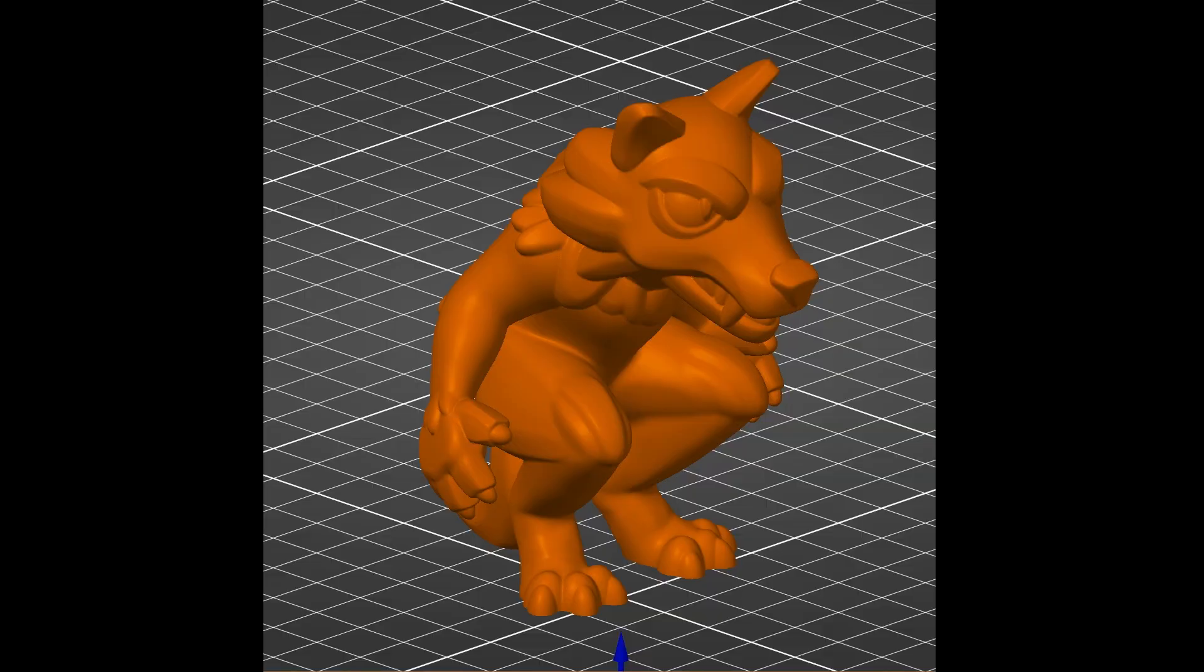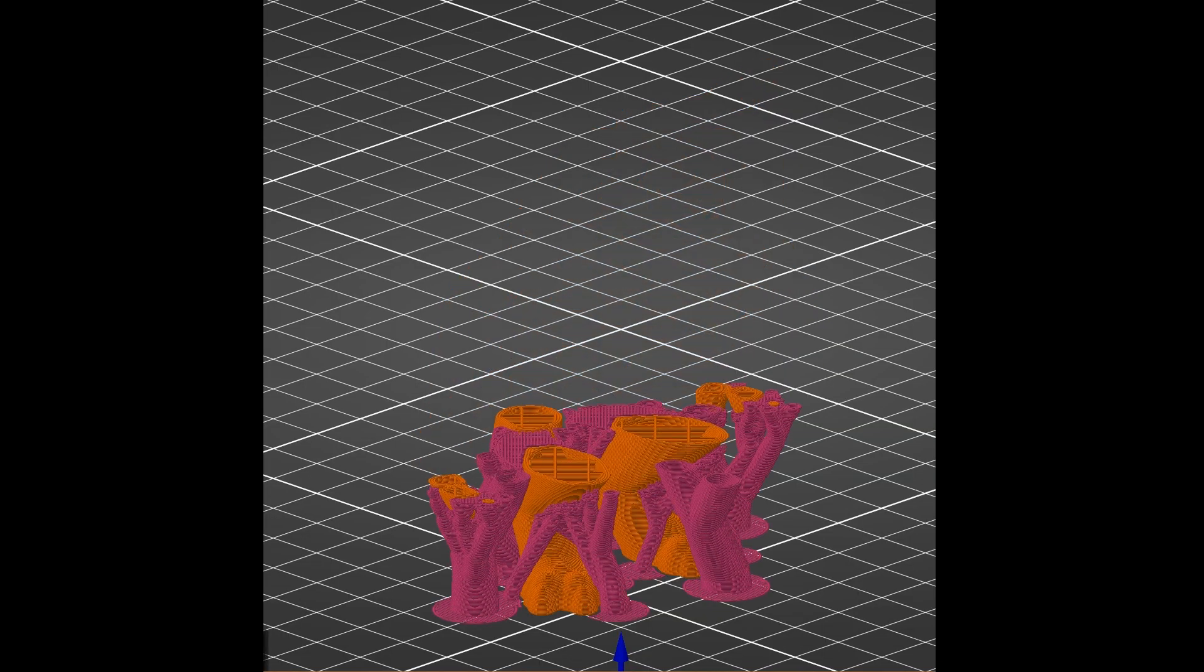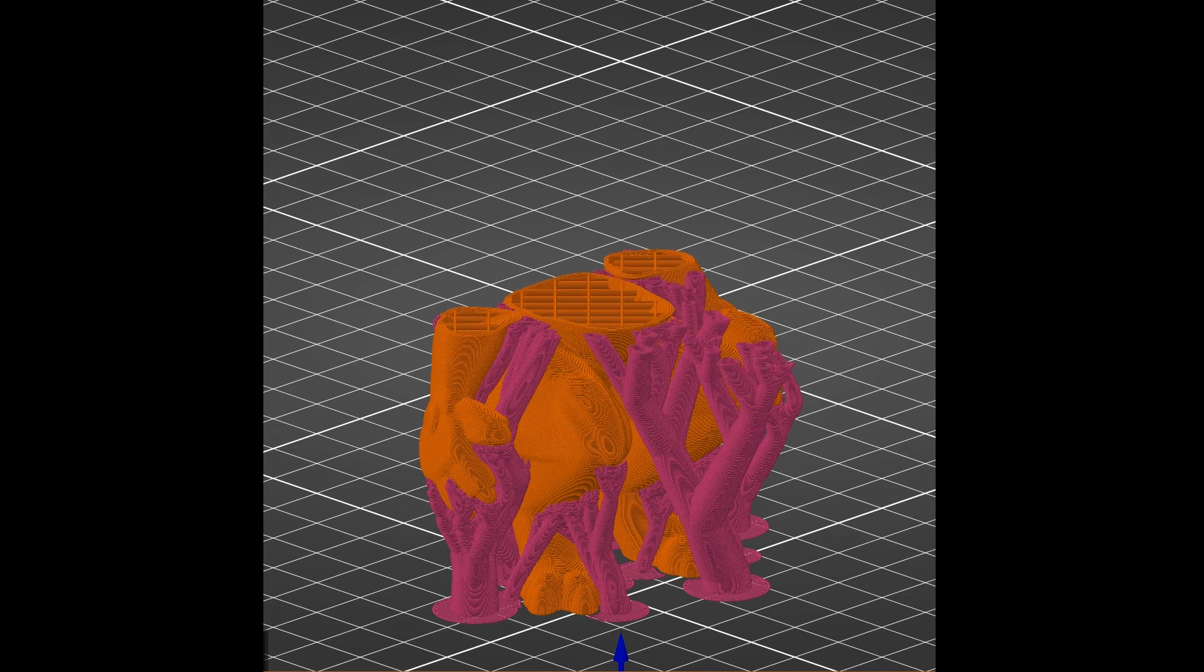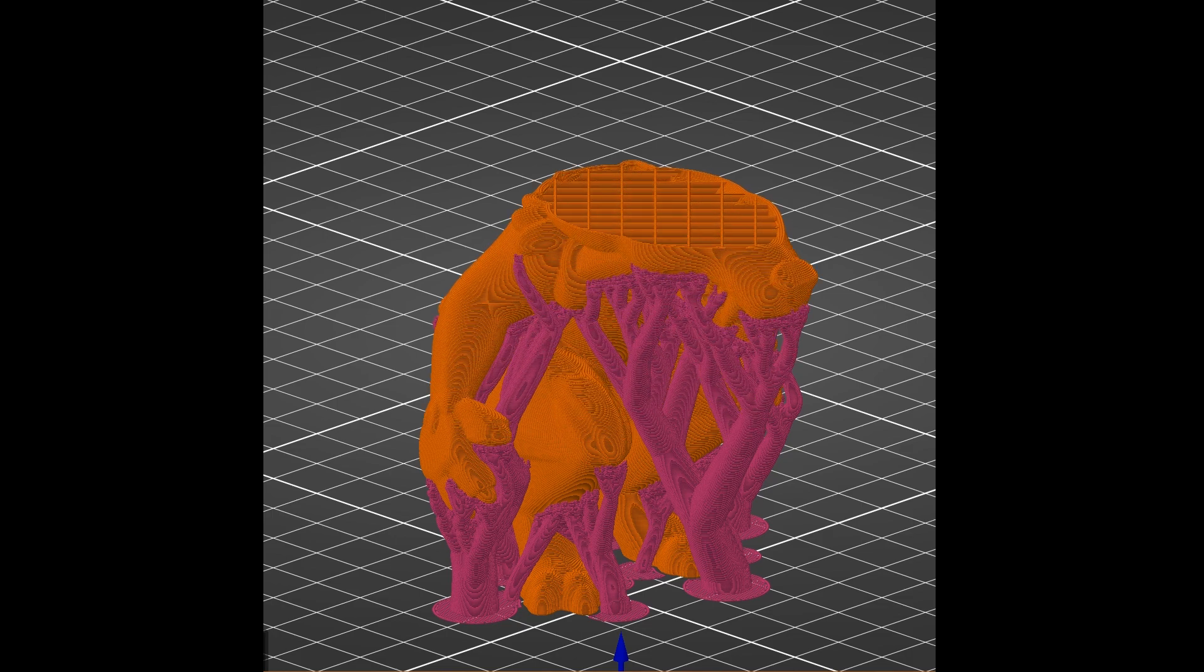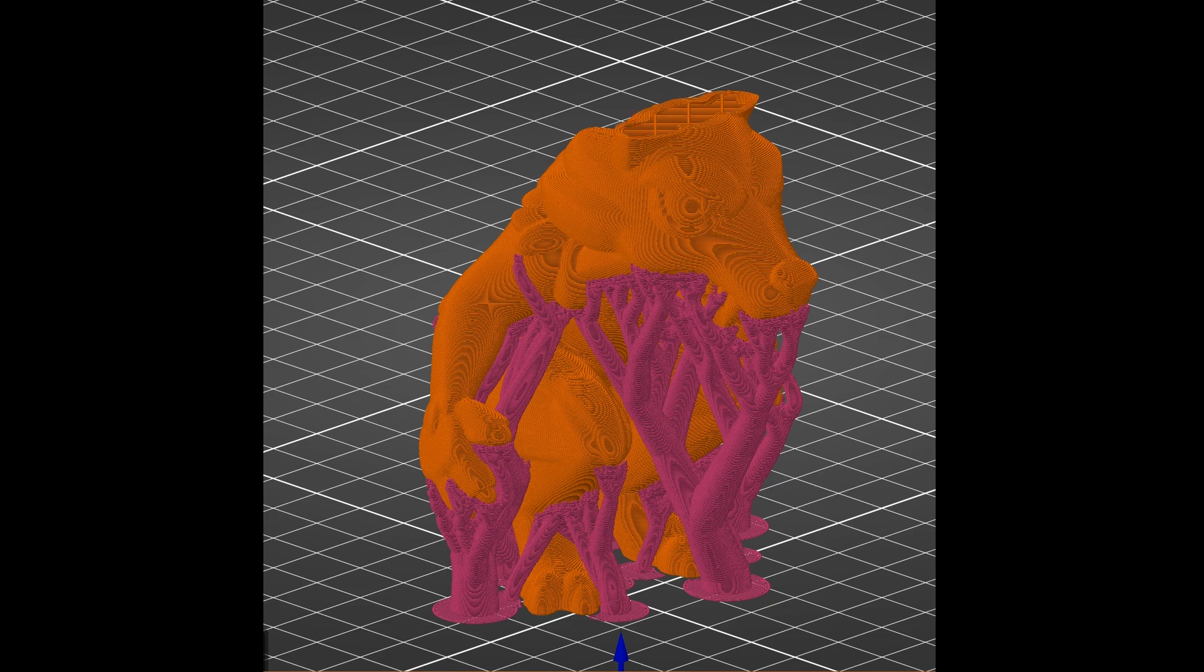For example, you can print a model in PLA while supporting it with PETG. Since these two polymers won't fuse together, your supports will be easier to remove, and your bottom surfaces will look cleaner.